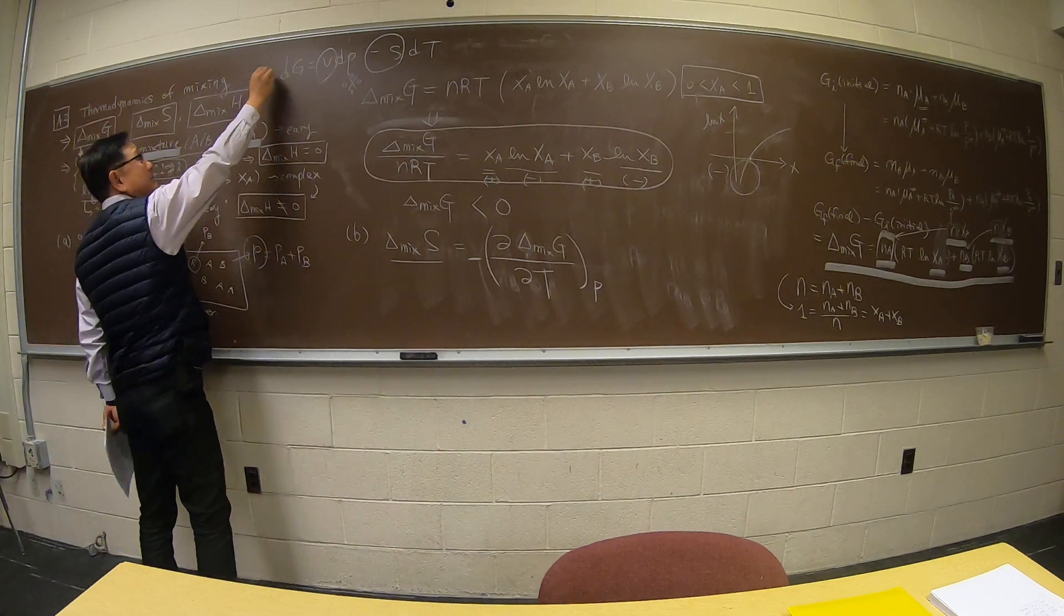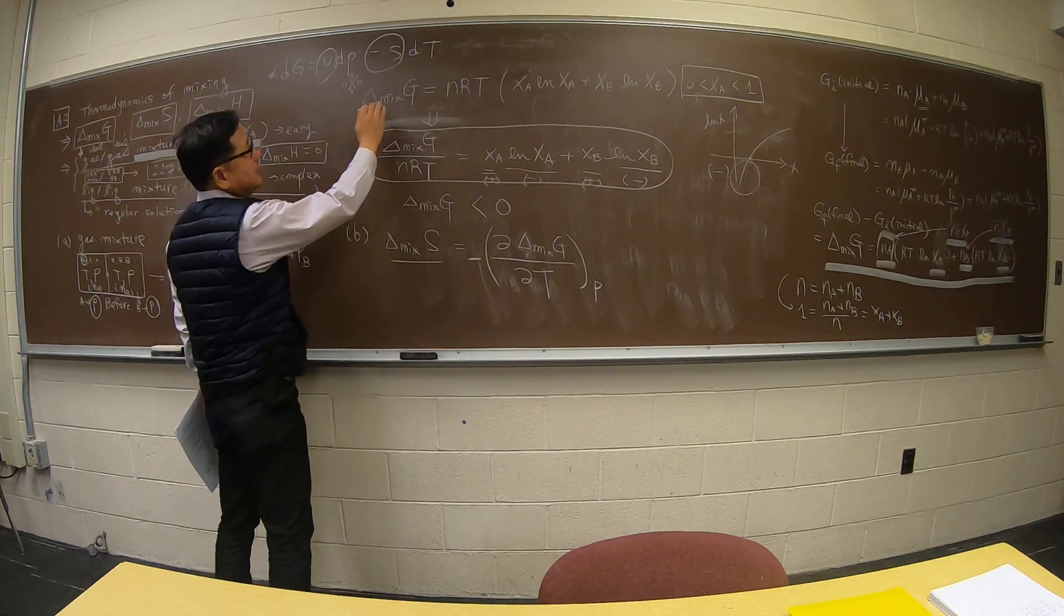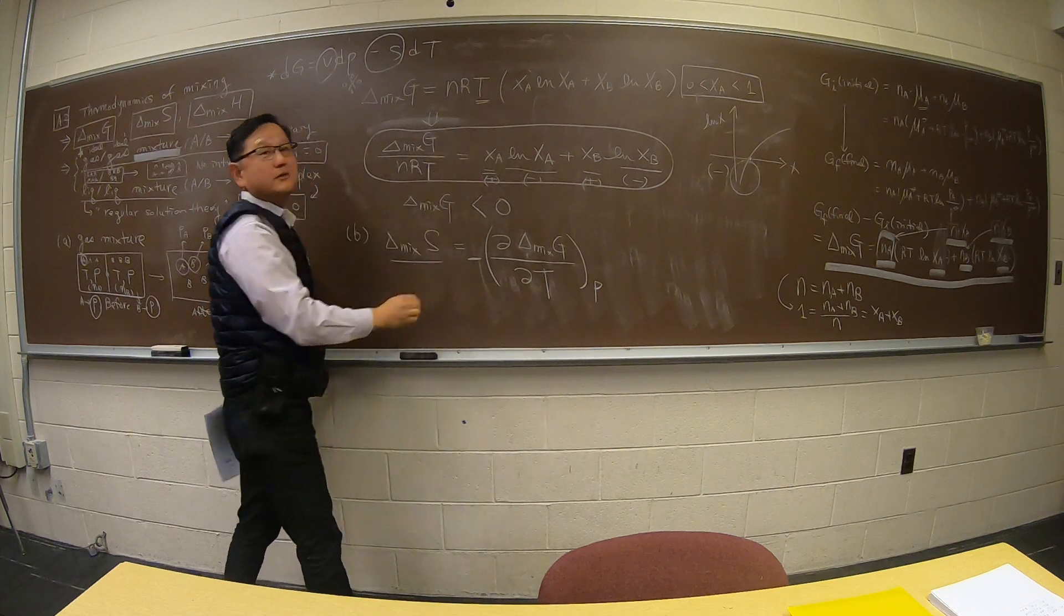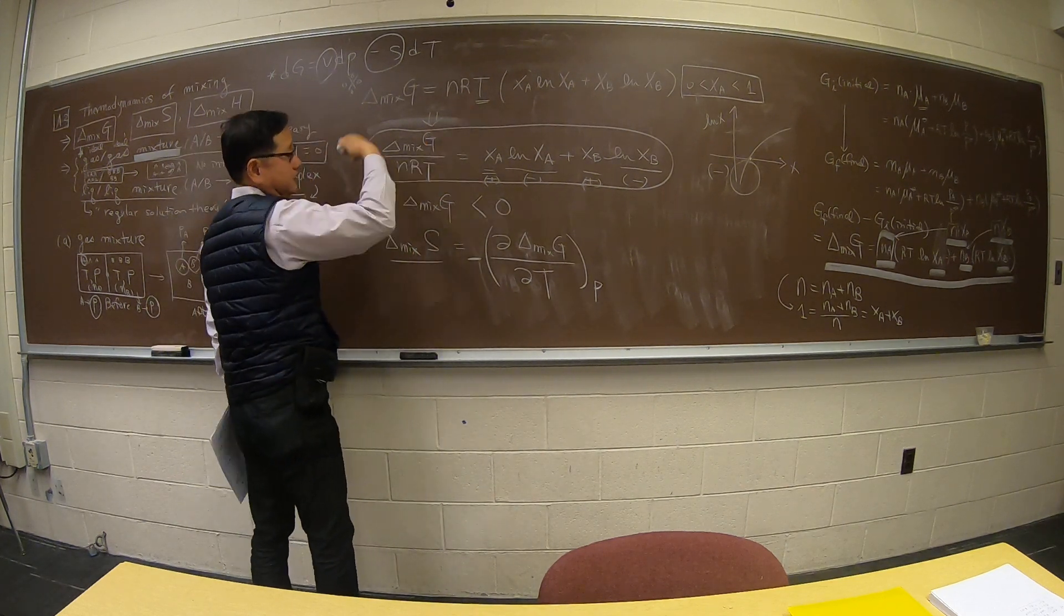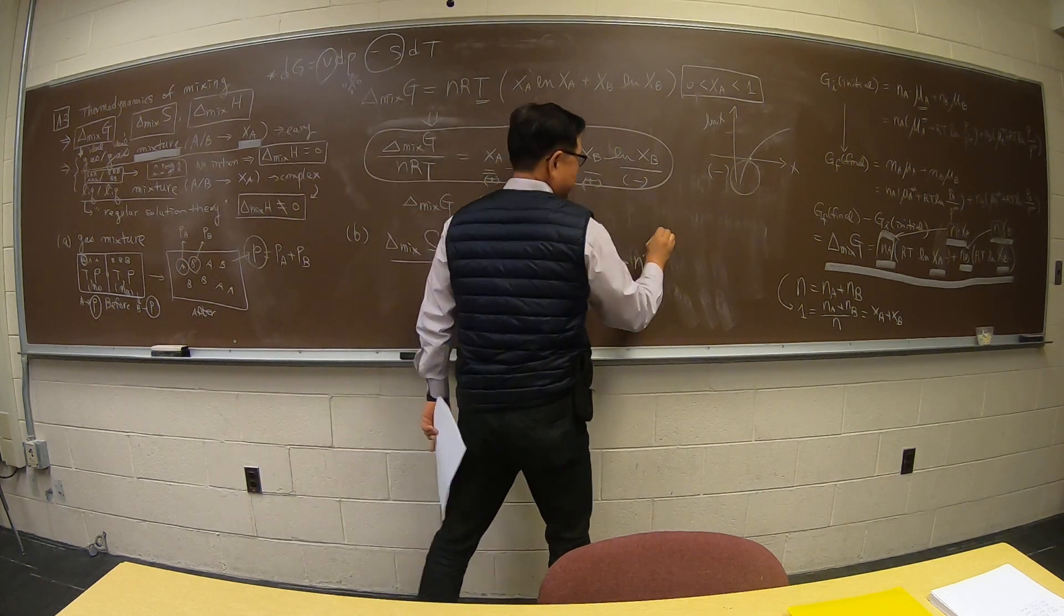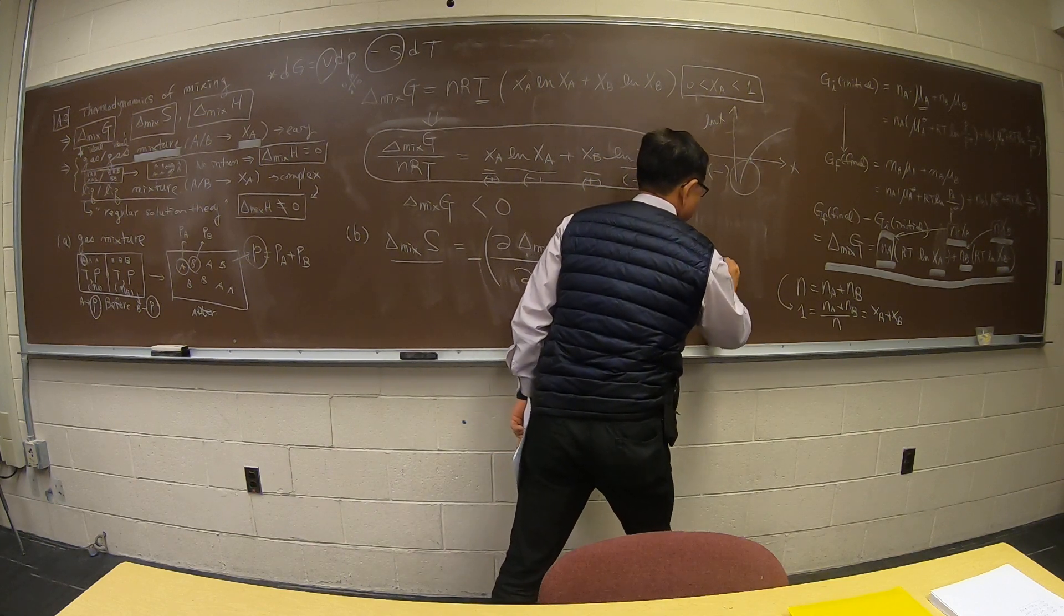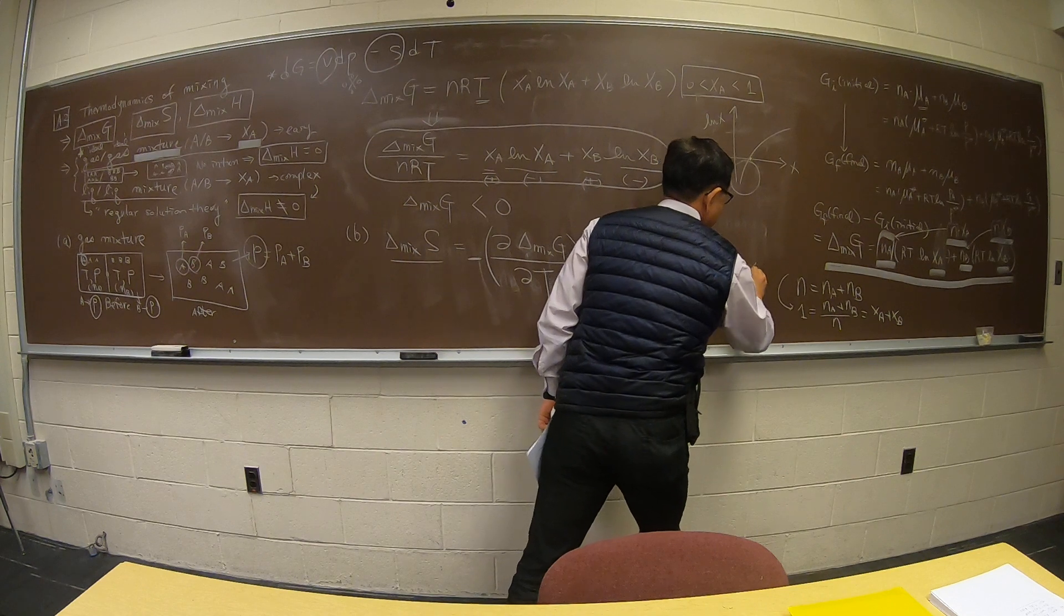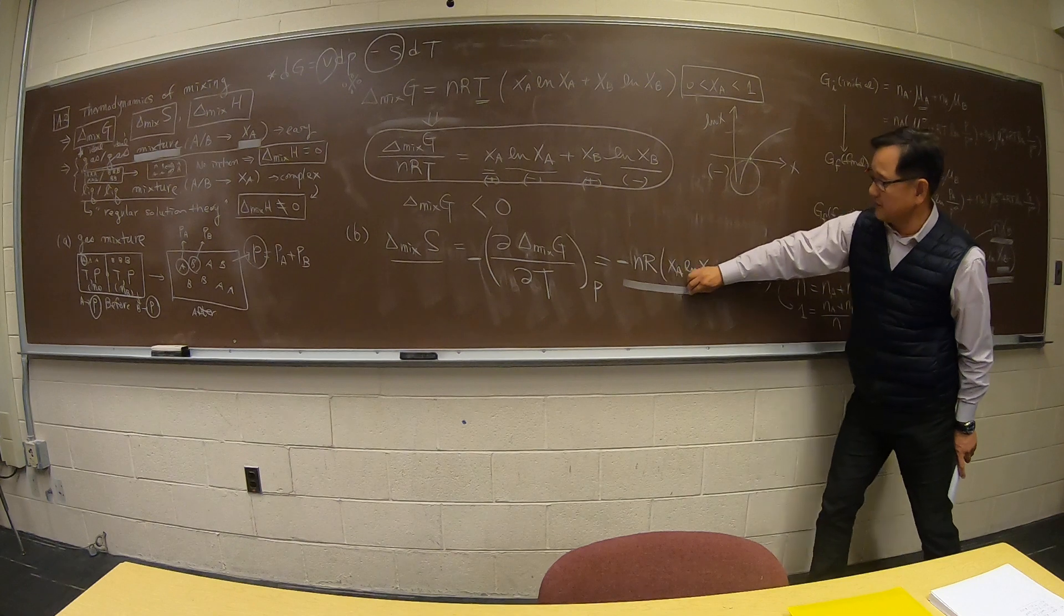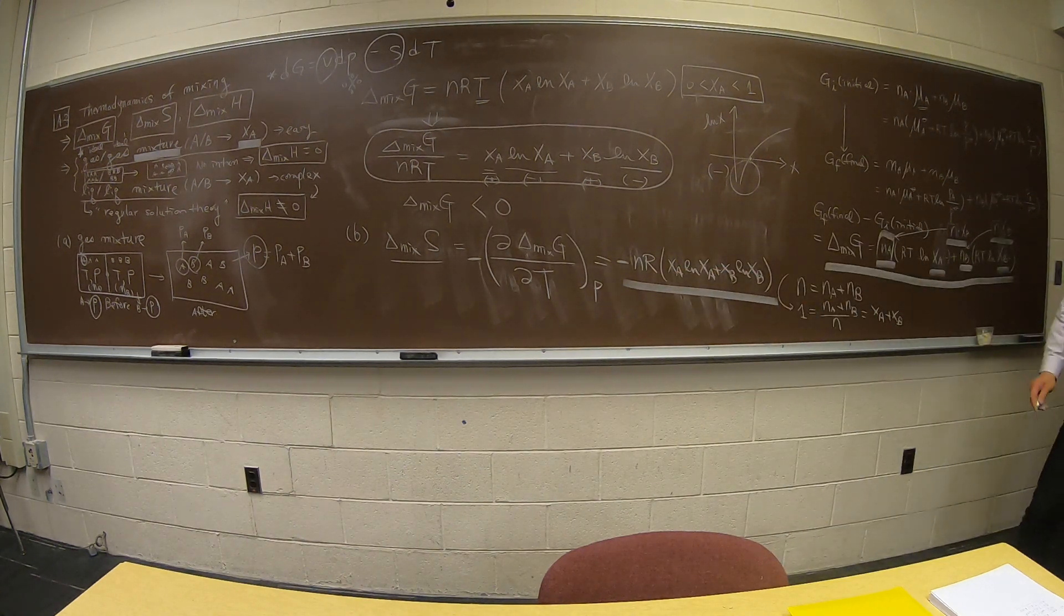Always coming back to this. So I will go back and do the temperature derivative, which is very simple to do - it's a linear function of temperature. So the answer here is minus nR. I got this equation down. So this is delta S mix and delta G mix.